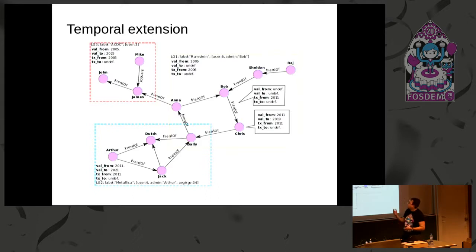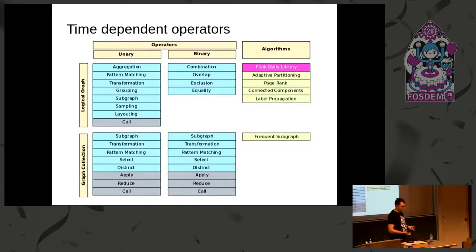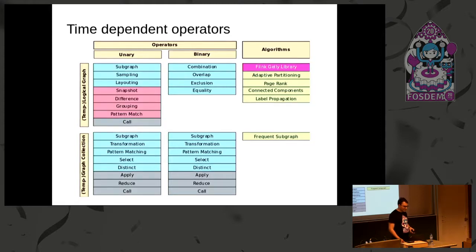As soon as we finished extending our graph model with these time attributes, we added another class of operators. We added specific operators that can handle those time attributes. We implemented two new types of graphs: Temporal Logical Graph and Temporal Graph Collection. And we made sure that all the classic operators are also able to use Temporal Logical Graph and Temporal Graph Collection. So there's no trade-off in using the classic model or the new Temporal Property Graph model. We implemented three operators: snapshot, difference, and grouping. Pattern matching is still work in progress.